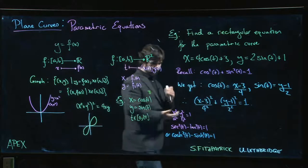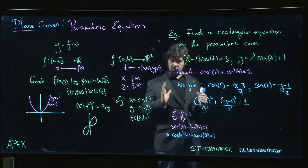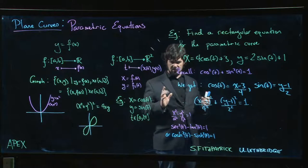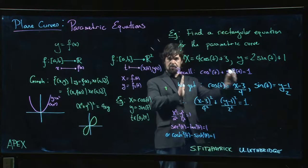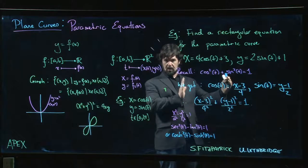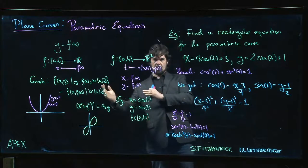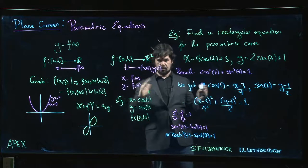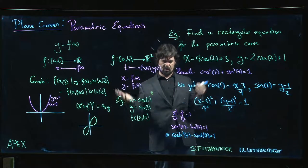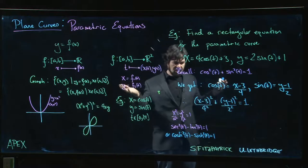The one thing you have to be careful about if you want to use the hyperbolic functions to parameterize a hyperbola is the hyperbolic cosine function is always positive. So you're only going to get the positive x half of the hyperbola, and for the other half you have to let x equal minus cosh(t). So you need two different parameterizations for the two sides of the curve, which sort of makes sense if you think about it.